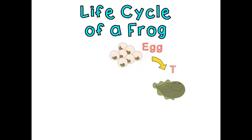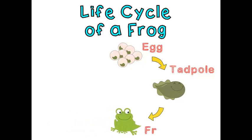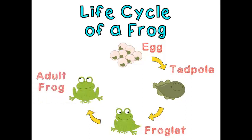The life cycle of a frog begins when an adult frog lays its eggs. The egg hatches and a tadpole emerges. The tadpole forms legs and eventually becomes a froglet with a tail. Finally, it becomes an adult and lays eggs.